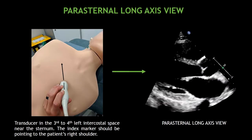The first view I'm going to show you is the parasternal long axis view. To obtain this view, place the transducer in the 3rd to 4th left intercostal space near the sternum, with the index marker pointing to the patient's right shoulder.